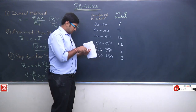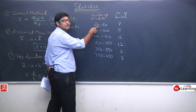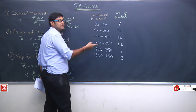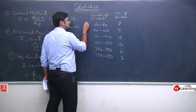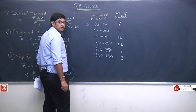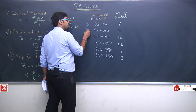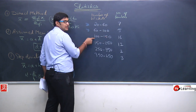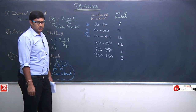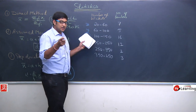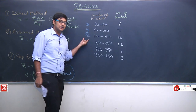Now, if we check the class intervals: first class 60 minus 20 is 40; second class 100 minus 60 is again 40; third class 150 minus 100 is 50 — the class interval has changed. Next, 250 minus 150 is 100, and the remaining classes also have interval 100. So the class interval is not constant.